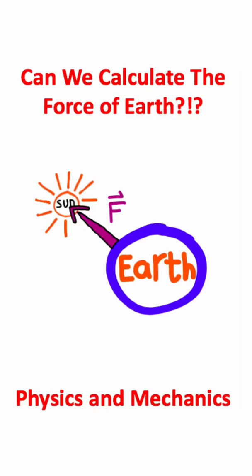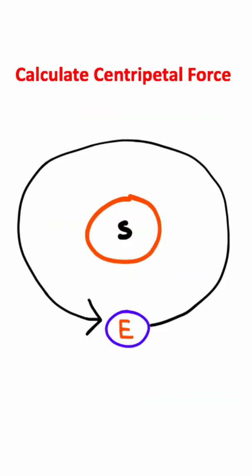Let's see if we can calculate the centripetal force that acts on Earth. So Earth revolves around the Sun every 365 days, and there's a tangential velocity that acts on Earth. The thing that keeps Earth in orbit around the Sun is a centripetal force of gravity.